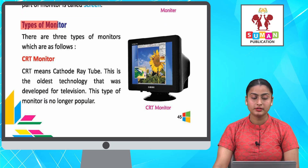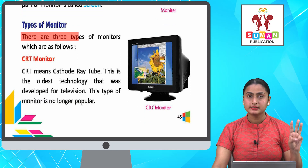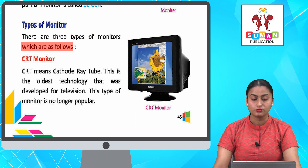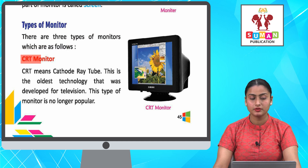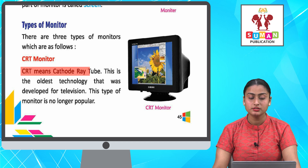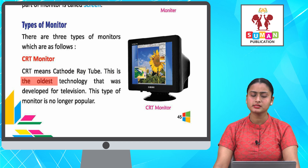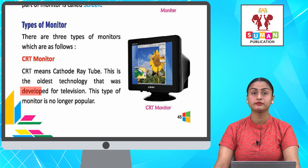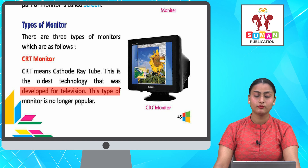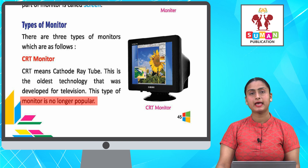There are three types of monitors: CRT monitor, LCD monitor, and touch screen monitor. CRT means Cathode Ray Tube. This is the oldest technology that was developed for television. This type of monitor is no longer popular.